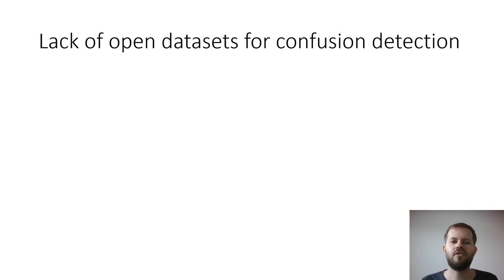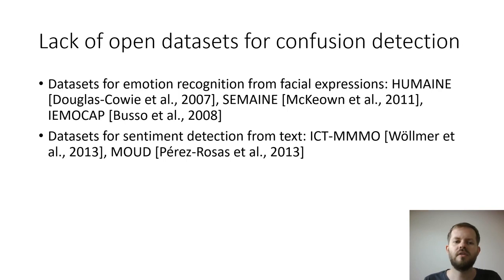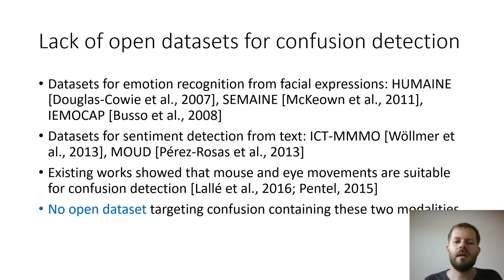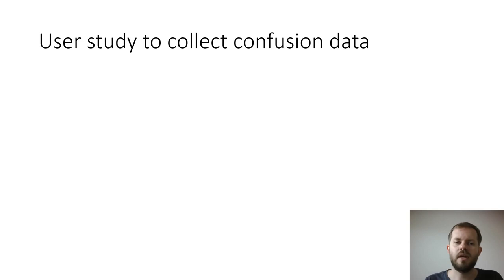However, there is a lack of open datasets for confusion detection, which hampers development in this field because there are no standard datasets to benchmark confusion detectors. There are some datasets for emotion recognition from facial expressions or sentiment detection from text, but as far as we know, there is no open dataset targeting specifically confusion that contains modalities such as mouse or eye movements. That's what we try to address in our work.